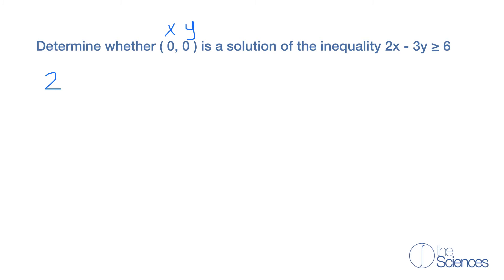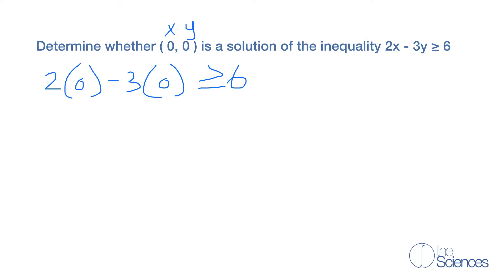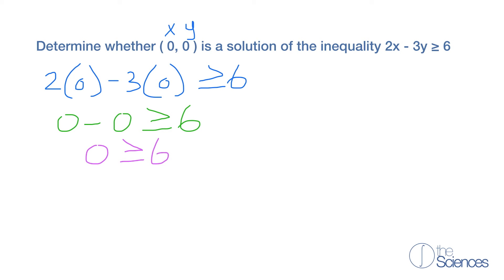So here we have 2 times x, or 0, minus 3 times y, or 0, is greater than or equal to 6. So 2 times 0 is 0, minus 3 times 0 is 0, is greater than or equal to 6. So 0 minus 0 is 0, is greater than or equal to 6.